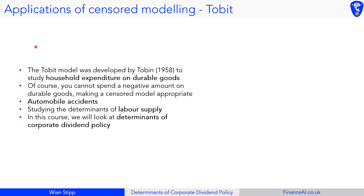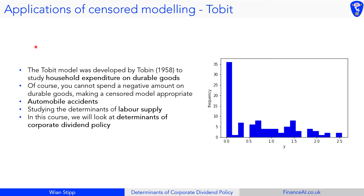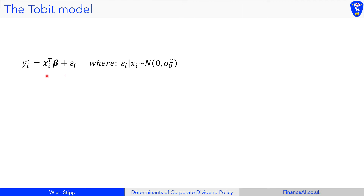This is typically the kind of frequency graph we see. For a zero-censored dataset, we'll see a huge frequency spike at zero and then a normal or Gaussian distribution beyond that. Our data actually looks a little bit nicer than this, which is very nice, but this spike is something you typically see.